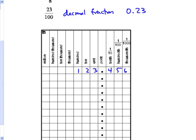So we would read that as 123 decimal 4, 5, 6, or we could read it as 123 and 4 tenths, 5 hundredths, 6 thousandths.